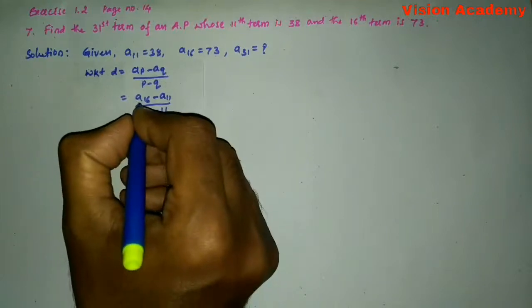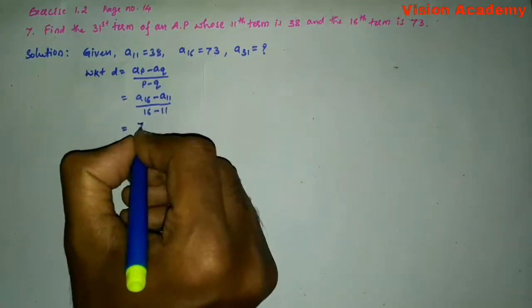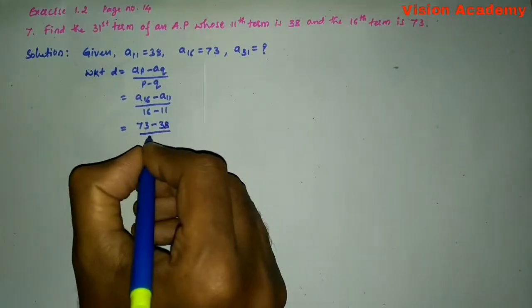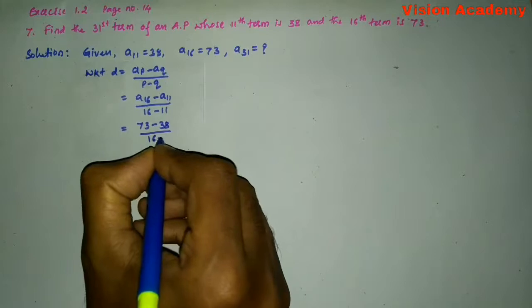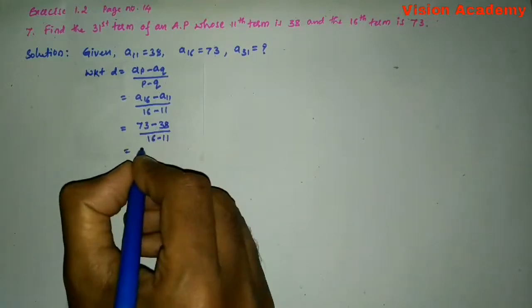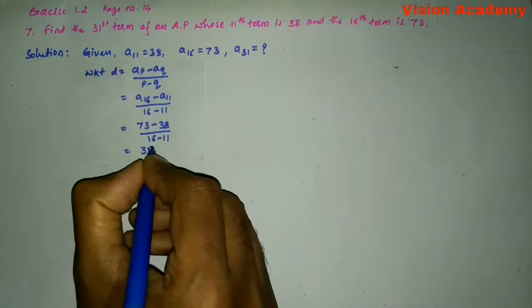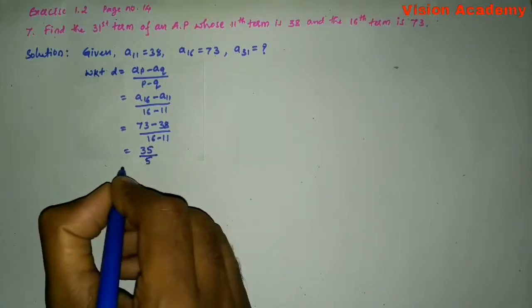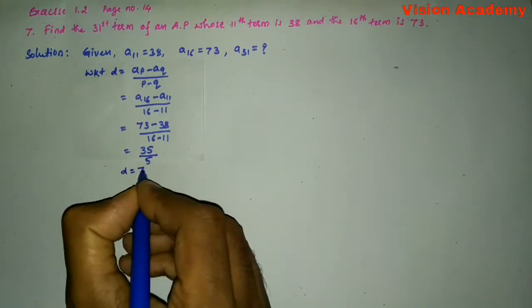So, let us substitute the value of A16 that is 73 minus A11 is 38, which equals 35, whole divided by 5. Therefore, D is equal to 7.